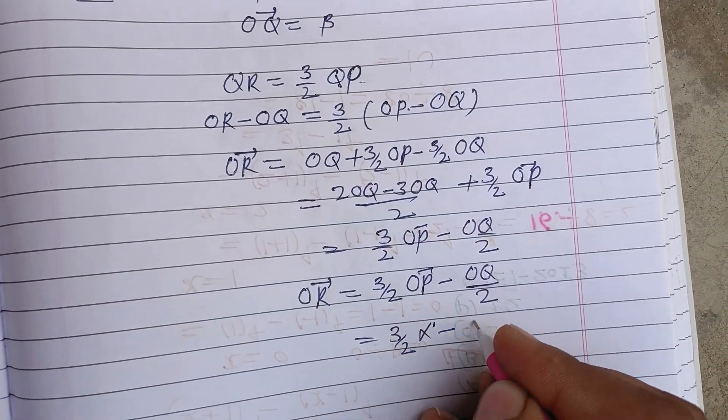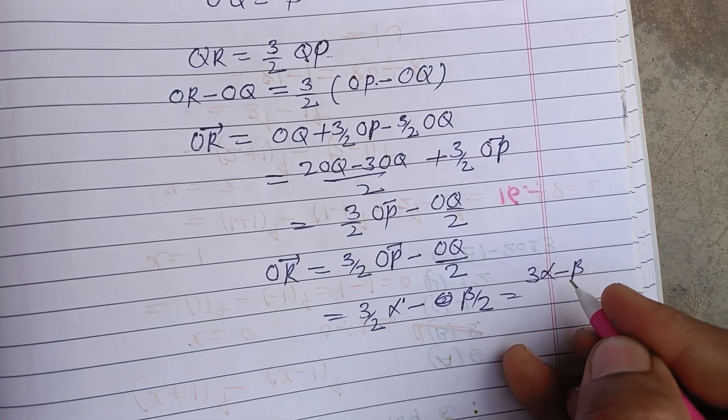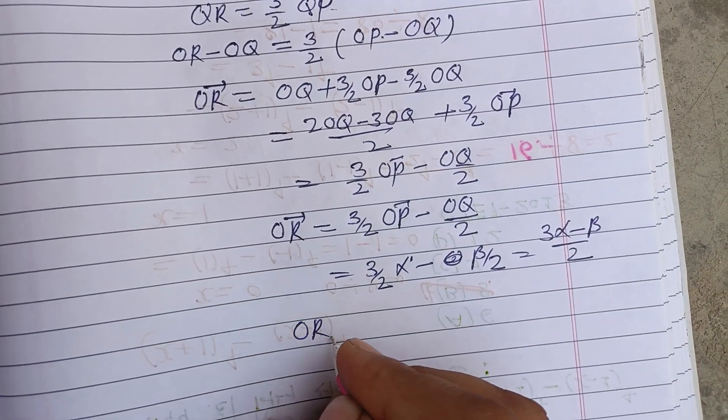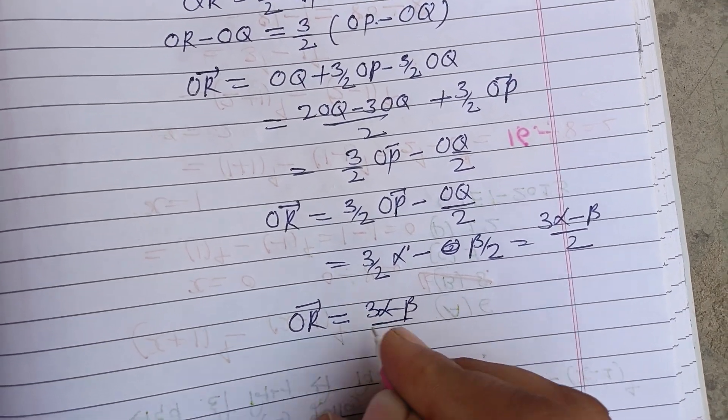three by two α, and OQ is β, so β by 2. Therefore, three α minus β by 2. Therefore, the position vector of R is three α minus β by 2.